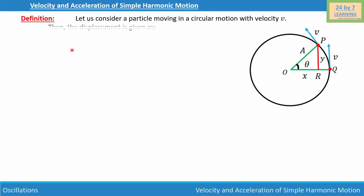The displacement is given as x equals A cos(ωt + φ), where φ is the phase. Basically, the particle is moving an additional angle phi beyond point P.